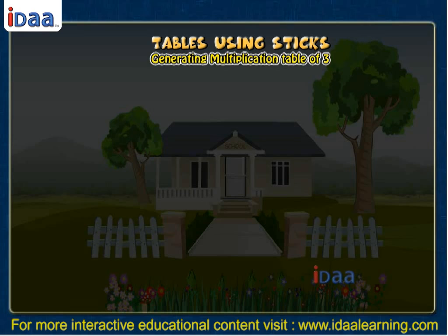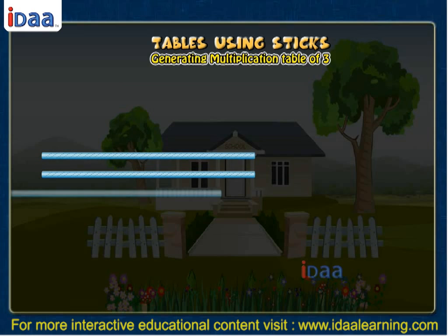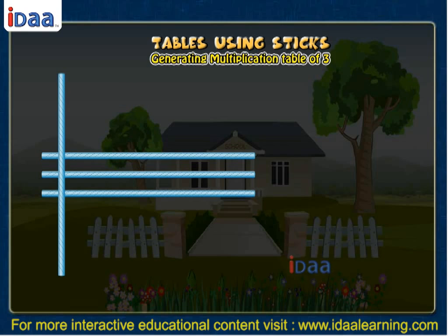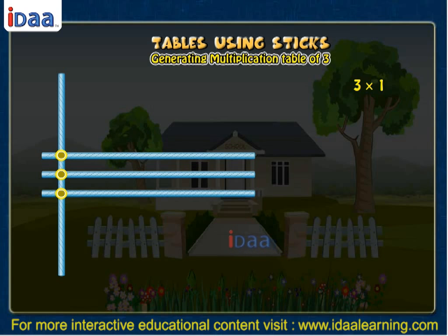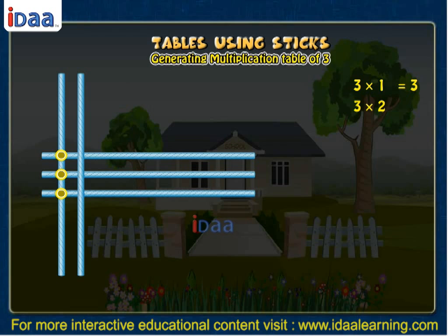Say of 3. We first arrange 3 sticks horizontally and then 1 stick vertically and write 3 into 1. Now we count the number of intersection points. These are 3. So 3 into 1 is equal to 3. Now we arrange 2 sticks vertically on the horizontal sticks and write 3 into 2. Now we count the number of intersection points. These are 6. So 3 into 2 is equal to 6.